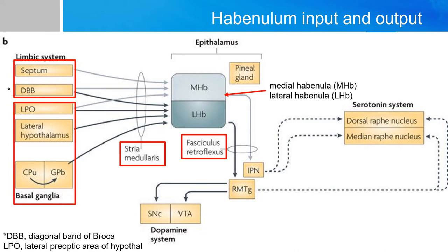Eventually, these nuclei send information through the fasciculus retroflexus into the interpeduncular nuclei, and ultimately wind up in the raphe nucleus.